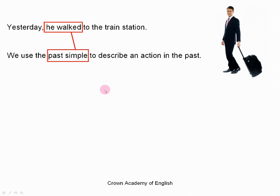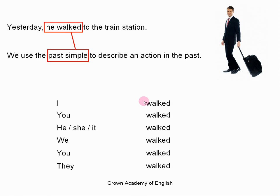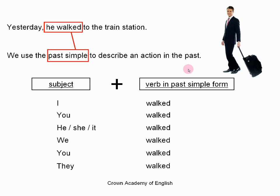Now let us look at the positive form. I walked. You walked. He, she or it walked. We walked. You walked. And they walked. So the form is: the subject and then the verb in the past simple form.